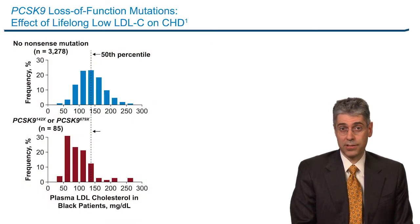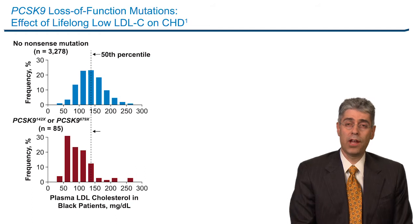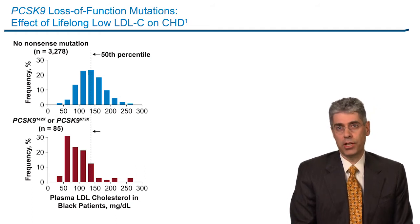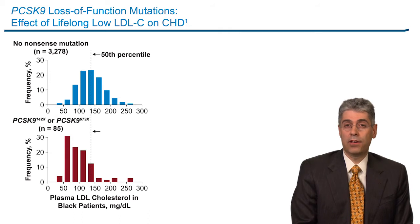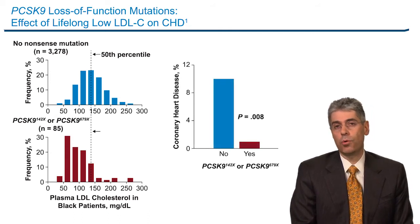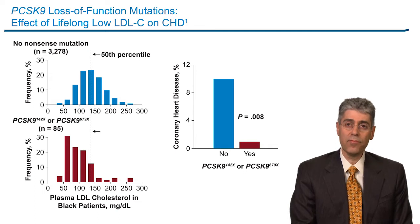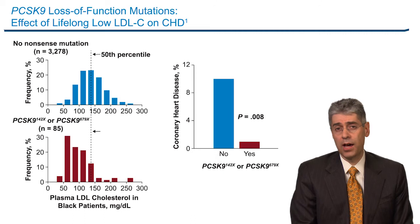It turns out that hypothesis was correct. Additional patients were found with loss-of-function mutations in PCSK9. Those individuals had lower levels of LDL cholesterol and strikingly lower risk of cardiovascular disease. This was seen in a study led by Jonathan Cohen and Helen Hobbs at UT Southwestern and replicated in multiple other cohorts. It's very reassuring to see that individuals with lower LDL cholesterol mediated by PCSK9 have lower risk of cardiovascular disease, and particularly myocardial infarction.